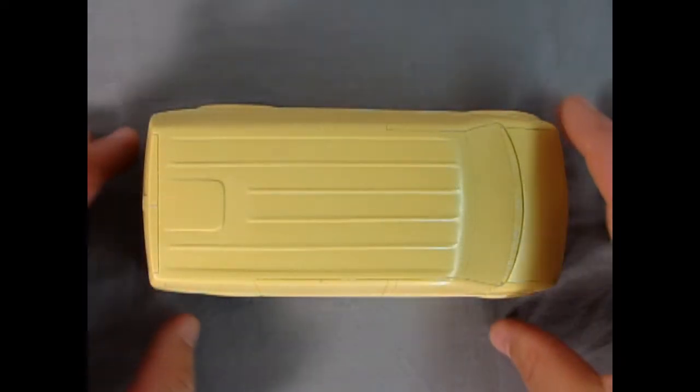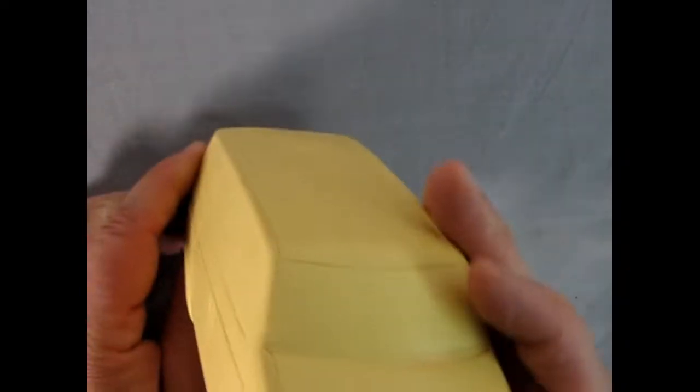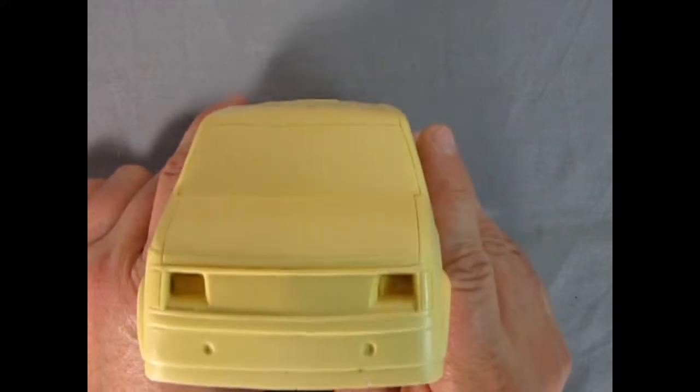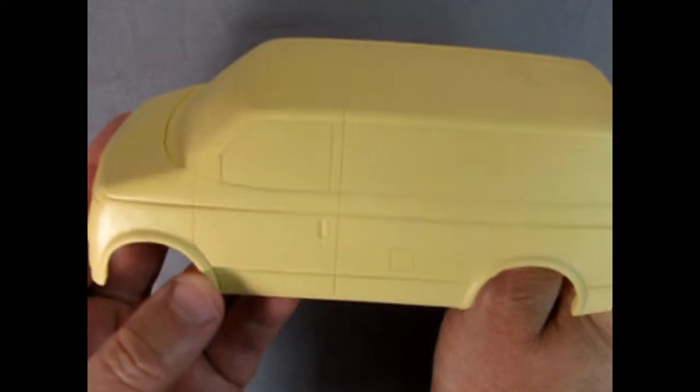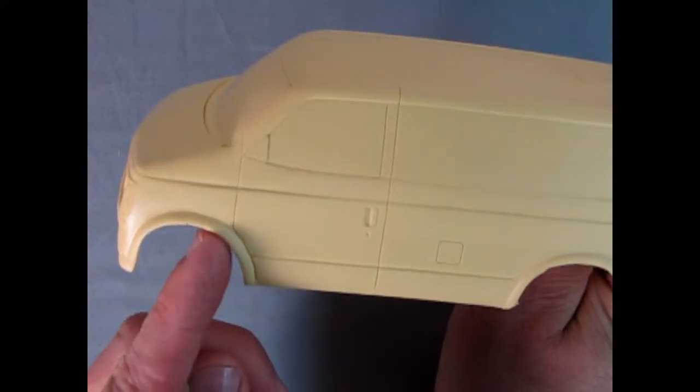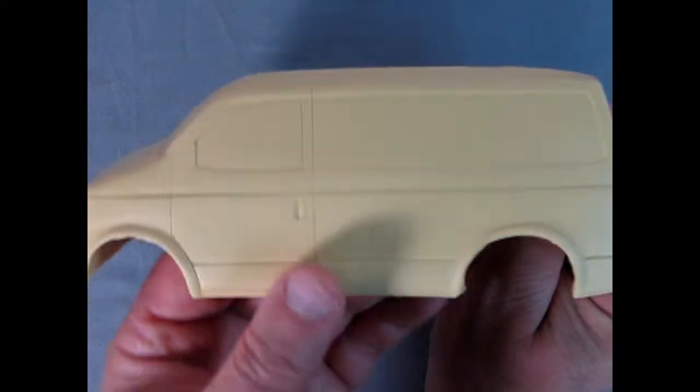Here we have the solid resin body of our Astro van. And there it is in the front. Really nice work on here. Excellent how it came out. Detail is crisp.